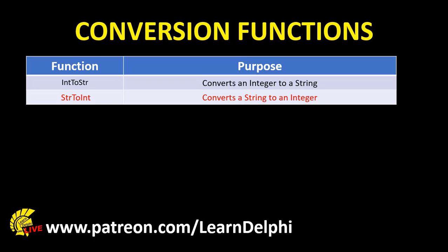Another function we use often is StringToInt. This function is the opposite of IntToString. We typically get these numbers from the text or captions of components like edits and labels. Remember in the ASCII lessons you learned that numbers are also characters. When we type numbers into input boxes or edits, they are strings. If you want to do calculations with those inputs, you must first convert the string to integers with the StringToInt function. Here is an example of the number 6 between single quotes — this number is actually a character. To store it in a byte variable, we must first convert it with the StringToInt function.